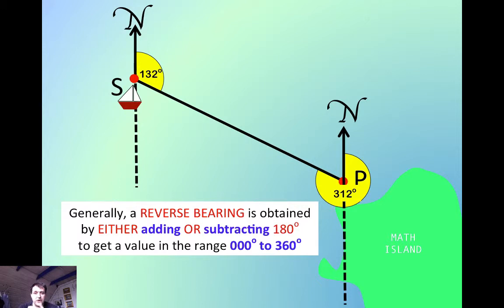Now generally speaking, a reverse bearing is obtained by either adding or subtracting 180 degrees to get a value in the range from 0 to 360, or 000 to 360. I'll explain why the three digits in a minute.